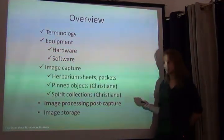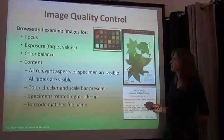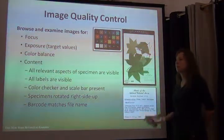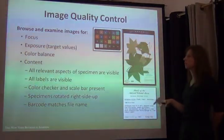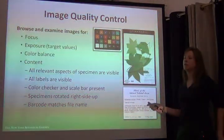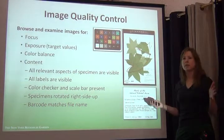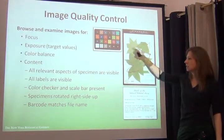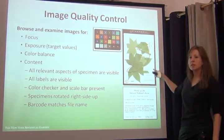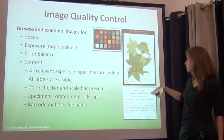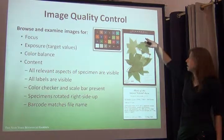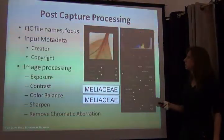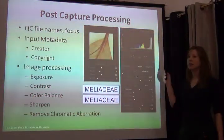So what's next? Now we get to process them — we get to see the results of our labor. We want to scroll through all the images we captured to make sure they meet our expectations. Check every 20 or 30 if you captured 500 specimens. Make sure all important things in the specimen are present, all labels are visible and legible, the color checker and scale bar are present, the image is rotated right side up, and the barcode matches the file name. For this I use Lightroom.